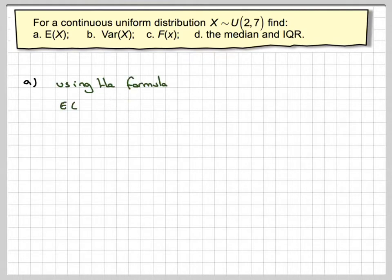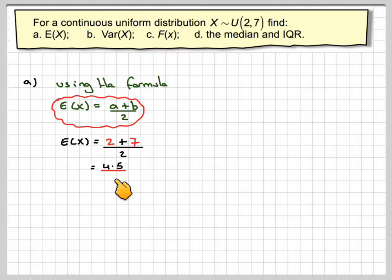So using the formulas now, E(X) was a plus b over 2. So a is going to be 2 and b is going to be 7. So E(X) will be 2 plus 7 over 2, which is 9 over 2, which is 4.5.